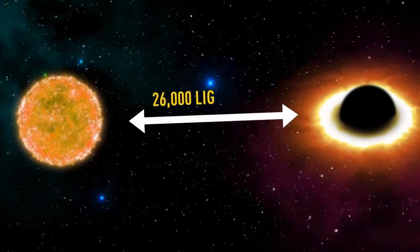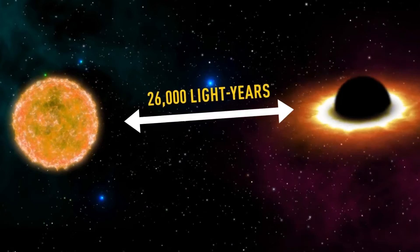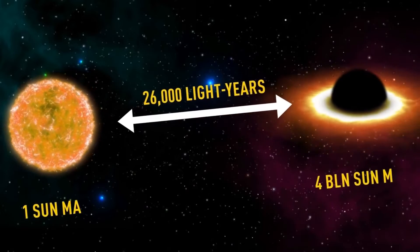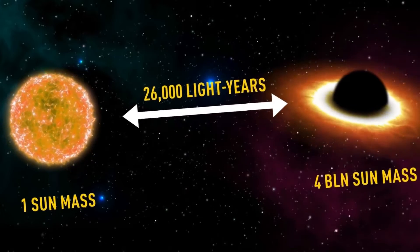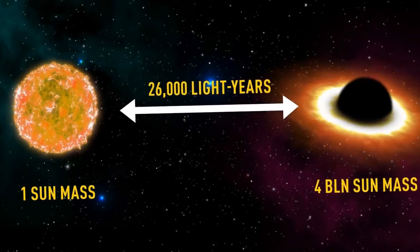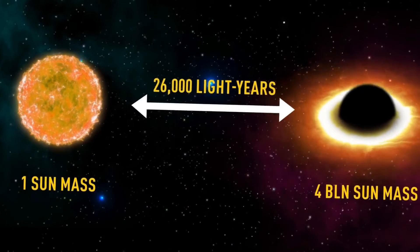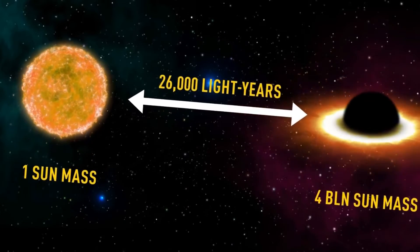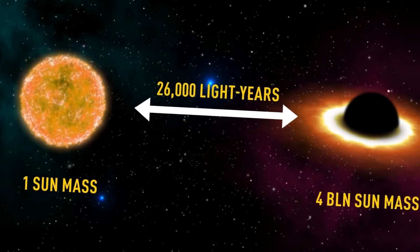In the center of each and every galaxy, there will be a supermassive black hole. In our galaxy, there is a supermassive black hole and it is only 26,000 light years away.